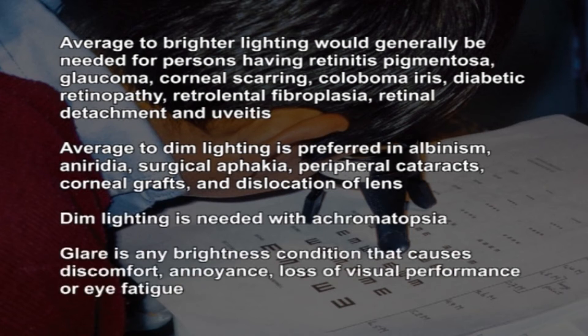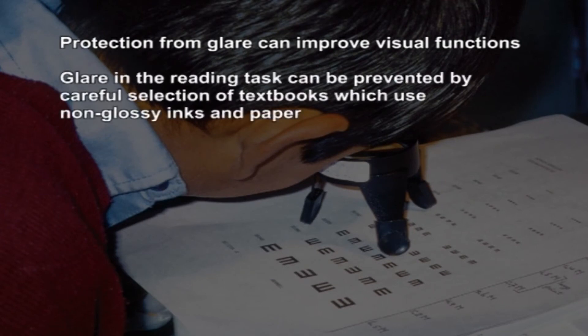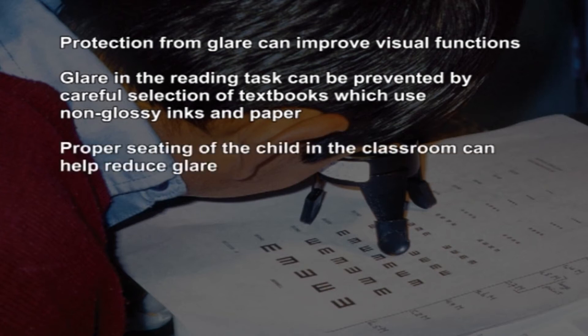Glare is any brightness condition that causes discomfort, annoyance, loss of visual performance, or eye fatigue, and protection from glare can improve visual functions. Glare in reading tasks can be prevented by careful selection of textbooks using non-glossy inks and paper. Proper seating in the classroom can help reduce glare; children should sit in positions directing their vision away from windows. Charts and other visual materials should never be placed adjacent to windows, and natural light from the top of windows is usually better because of less glare.